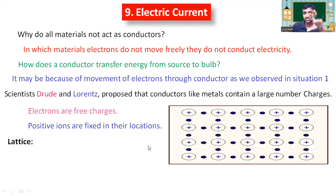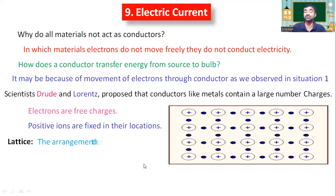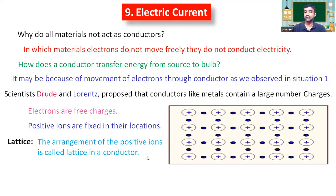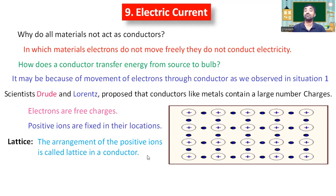The space where the fixed positive charges are arranged is named the lattice. The lattice is that space arranged with positive charges. In the lattice, we are able to see the movement of electrons because they are moving around the nucleus — around the positive charges. According to the Drude and Lorentz theory, positive charges are fixed in their locations called lattice, and electrons are moving around the nucleus constantly and continuously.